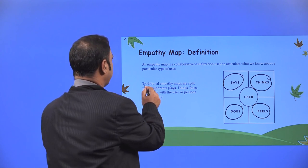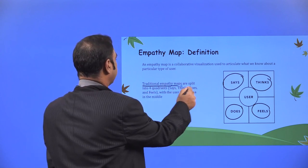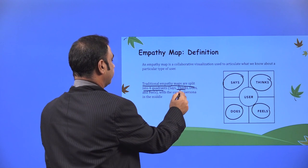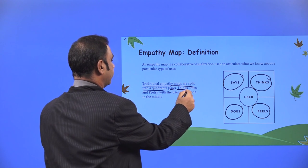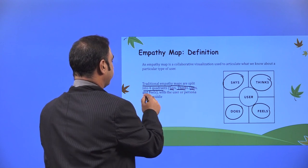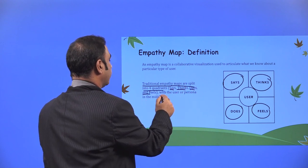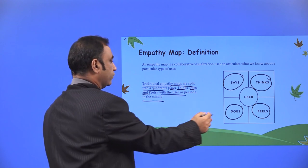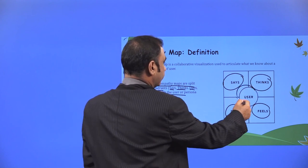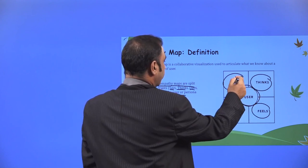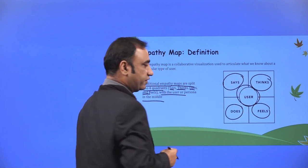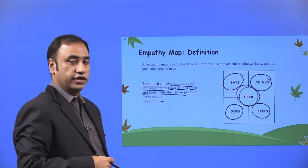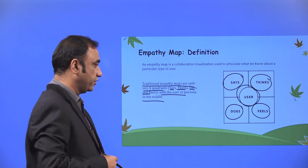Traditional empathy maps are split into four quadrants: says, thinks, does, and feels — with the user or the persona in the middle. This is the user or the person about whom we want to know what they say, what they think, what they do, and what they feel.